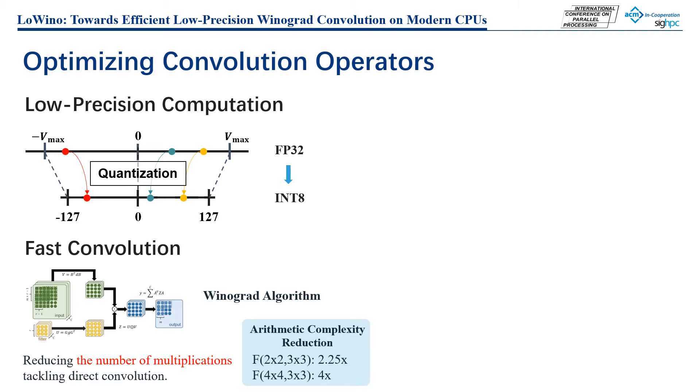On the other hand, Winograd convolution, a fast convolution algorithm, reduces computational complexity by utilizing transformation operations. Due to its remarkable performance, it has been integrated in many libraries. Although these two methods show effectiveness for accelerating convolutions, combining Winograd convolution with low-precision computation is a challenging problem.